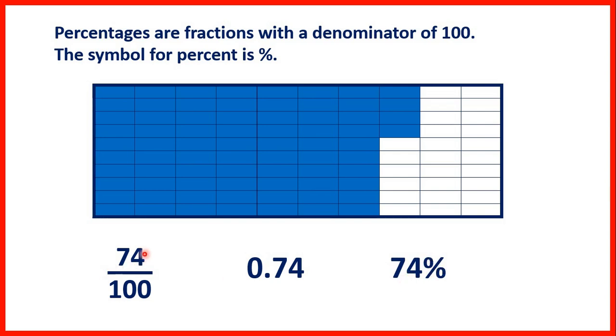Notice it's not 74 over 100 percent, because the percentage sign tells us that it has a denominator of 100. The percentage sign tells us that it's a fraction over 100.